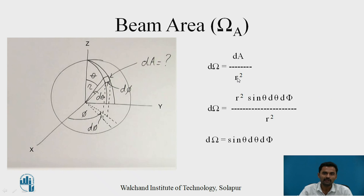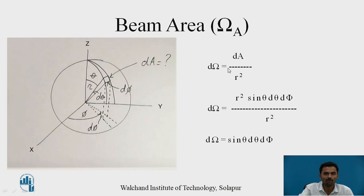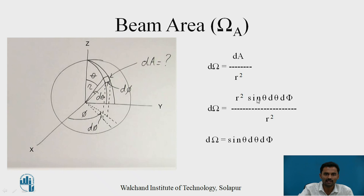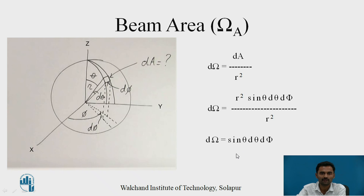Now we calculate the incremental solid angle. The formula for solid angle is surface area divided by r². So the incremental solid angle is: dΩ = dA / r² = r²·sinθ·dθ·dφ / r² = sinθ·dθ·dφ. This is the incremental beam area or incremental solid angle.